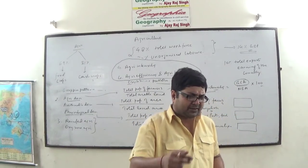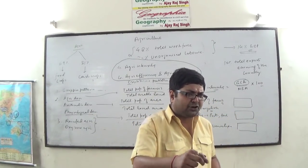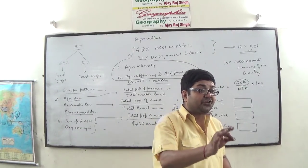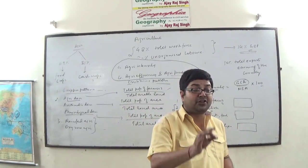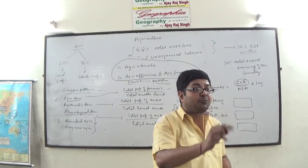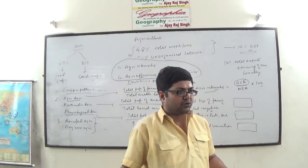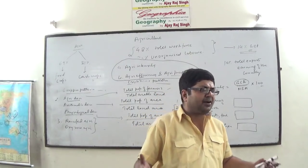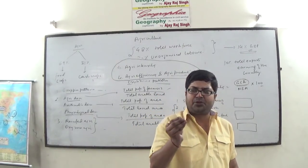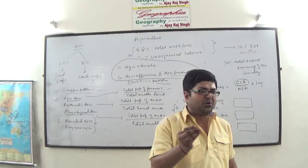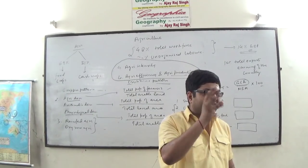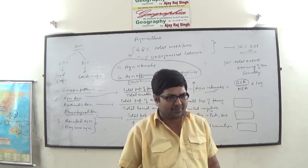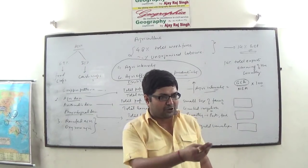In Farrukhabad, right now potatoes are selling at 3 rupees per kg and nobody is purchasing them. In Delhi, the cost of potato is 25 to 30 rupees per kg — a distance of only 200 km. This is because of lack of marketing and storage capacity. 30% of food production gets destroyed because of lack of adequate storage capacity. Adequate marketing facilities are not there.